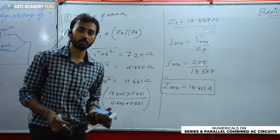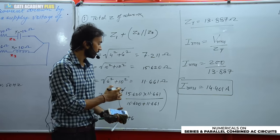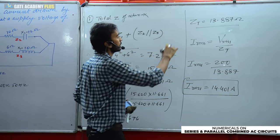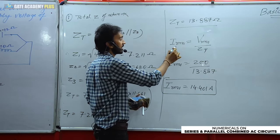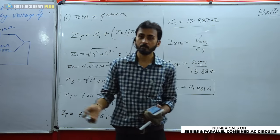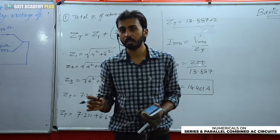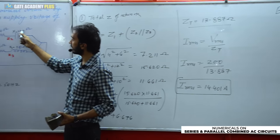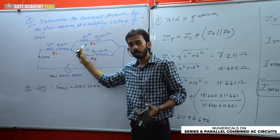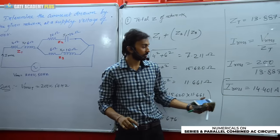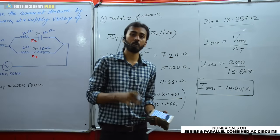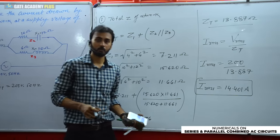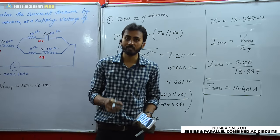The key takeaway is that this is simply Ohm's law. The important part is calculating Z_total using both series and parallel concepts. Once you have Z_total, substitute into I_RMS = V_RMS / Z_total. You could also solve this in rectangular form using +j for XL and −j for XC, and obtain results in polar form with magnitude and phase angle.